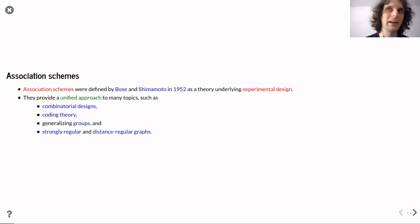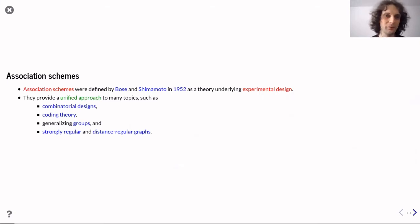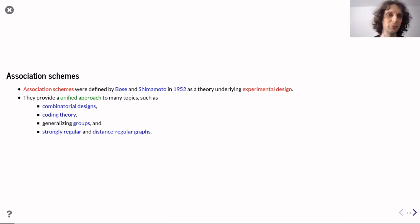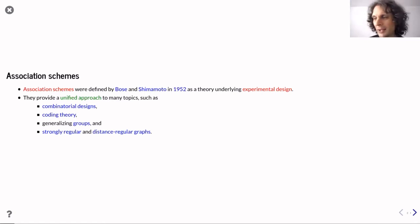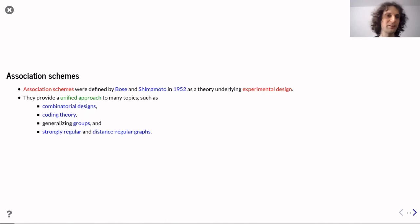Most people here are familiar with association schemes, but let me give a quick introduction. They were first defined as a theory underlying experimental designs and provide a unified approach to many topics — combinatorial designs, coding theory, and as a generalization of groups. For strongly regular and distance regular graphs, they provide some algebraic background for studying them.